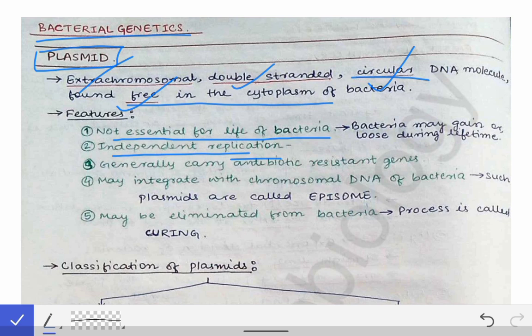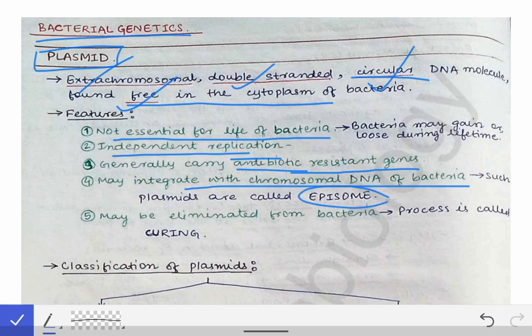Generally, plasmids carry antibiotic resistant genes — those plasmids are called R plasmids. Another feature is that a plasmid can integrate with the chromosomal DNA of the bacteria; when integrated, it is called an episome. The plasmid can also be eliminated from the bacteria, and that process is called curing.